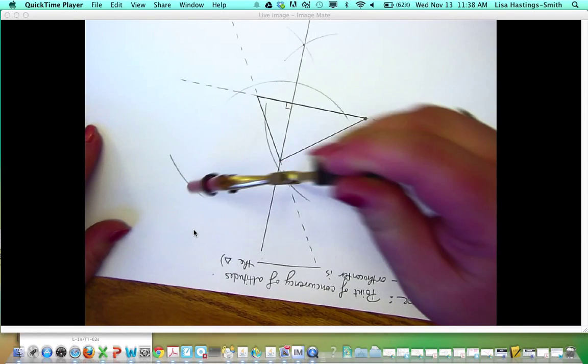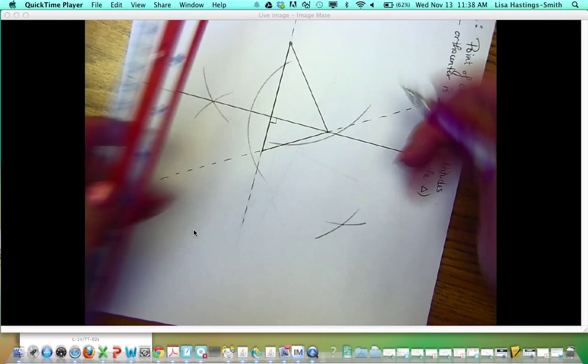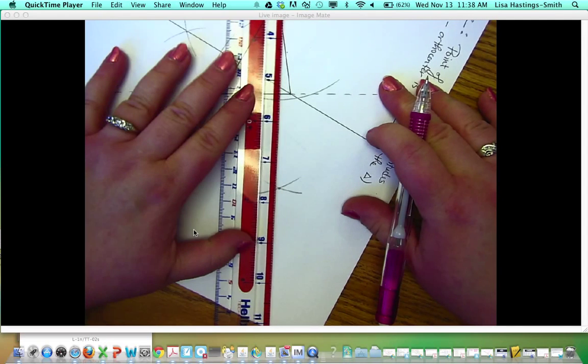and X there. And so the altitude will go through that point and through the vertex.